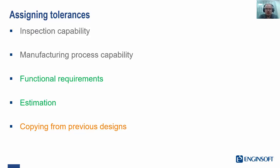First, let's talk about inspection capability. Ideally our requirements should be set by what outputs we need, but there may be a need to compromise to accommodate inspection capability if it doesn't affect overall quality. For instance, you may decide to allocate tolerances that contribute to a stack-up in different places to accommodate this.